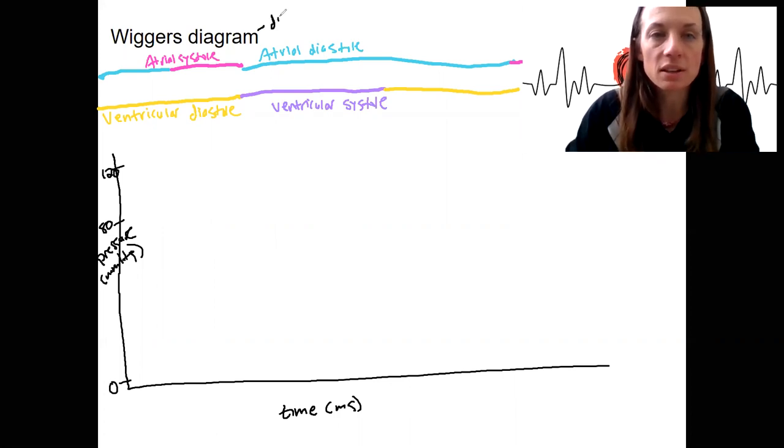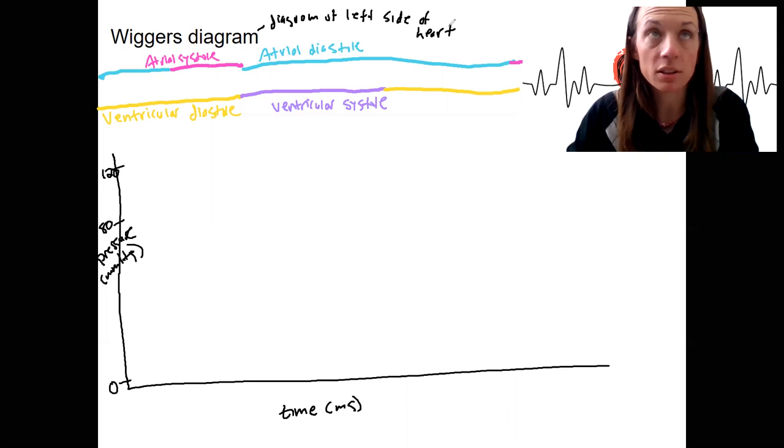What it's doing is it's really a diagram of the left side of the heart we're going to use as an example. So the pressures in the left side are slightly greater than the right side because the left side of the heart has to pump to the entire body. So that's what we're going to graph here, like the left ventricle.